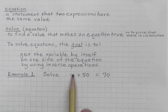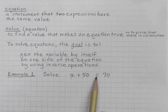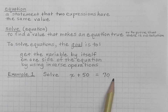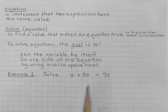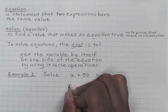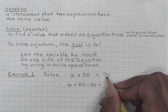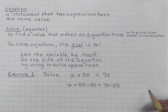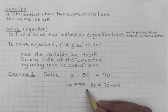If I want to get the variable by itself, I'm going to use inverse operations. Instead of adding 50 to x, I can subtract 50. But if this expression has the same exact value as the other expression, what I do to one side of the equation, I have to do to the other side. So if I'm subtracting 50 here, I also have to subtract 50 from the other side. So my next line of work looks like this: x plus 50 minus 50 equals 70 minus 50. Adding 50 and subtracting 50 undo each other, so I cross that out.